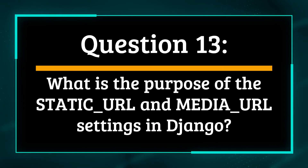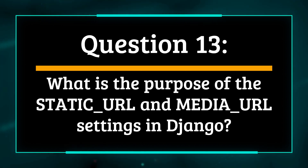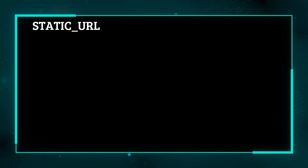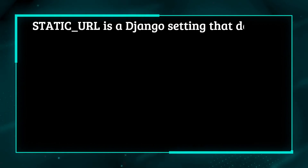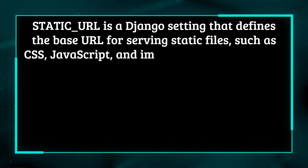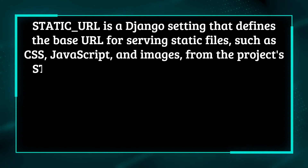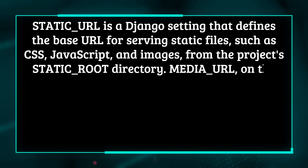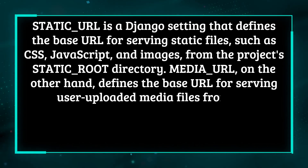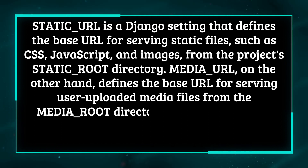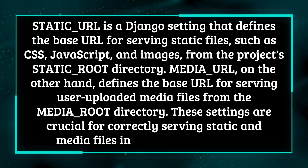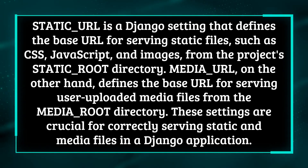Question 13: What is the purpose of the static_url and media_url settings in Django? static_url is a Django setting that defines the base URL for serving static files, such as CSS, JavaScript, and images, from the project's static_root directory. media_url, on the other hand, defines the base URL for serving user-uploaded media files from the media_root directory. These settings are crucial for correctly serving static and media files in a Django application.